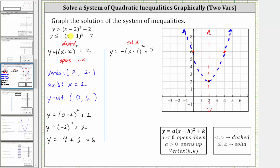But remember, we do have an inequality, and because y is greater than the quantity x minus two squared plus two, we are going to shade above the vertex, or in this case, inside the parabola, which means this region here is the solution to the first quadratic inequality. But let's actually select a test point just to verify we have shaded the correct region. To do this, we select a point in the shaded region to make sure it does satisfy the original inequality. For example, let's use the point two comma three, which is in the shaded region.